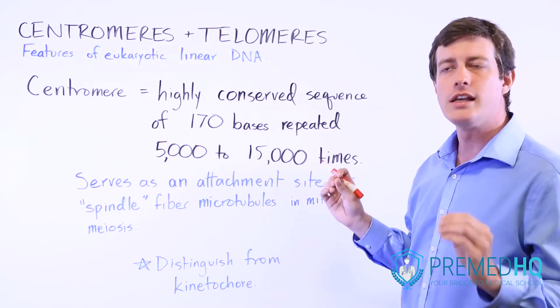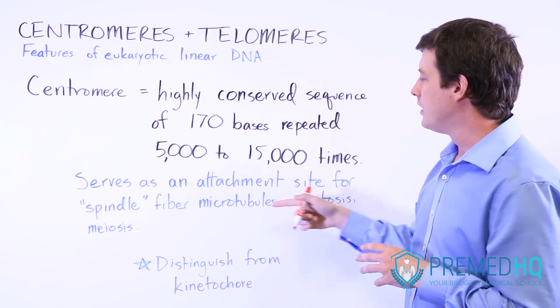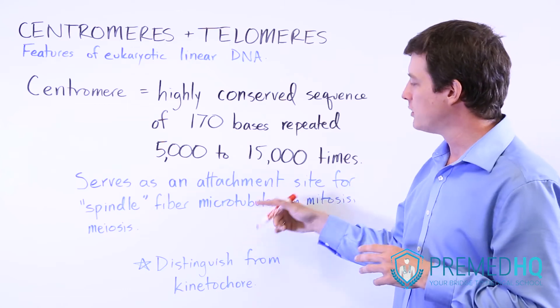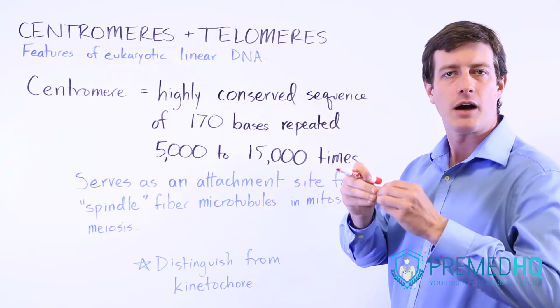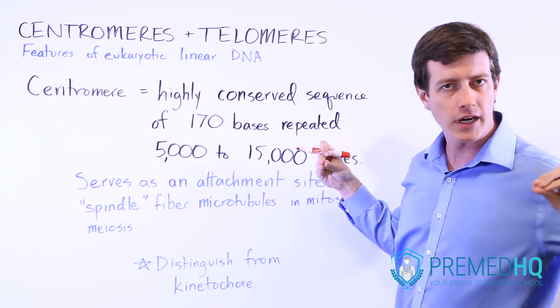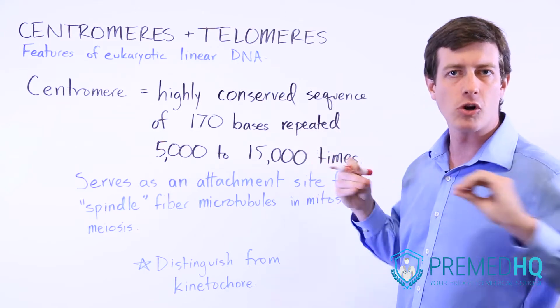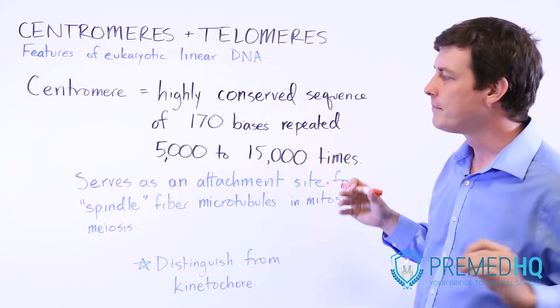The centromere is the point where the microtubules of the spindle will connect, and that will allow them to separate the different chromatids during that process.